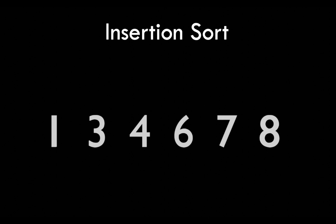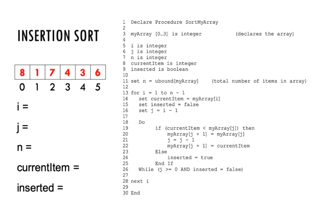The next thing to look at is the pseudocode. This is also an exam question looking at an array of size zero to three, but I'm going to use the example I just used. I've got a number of variables: i as an integer, j as an integer, and n as an integer, plus current item and inserted. The first line requiring action is line 11: set n to equal the upper bound of the array — the total number of elements. So with six elements, I set n to equal six.